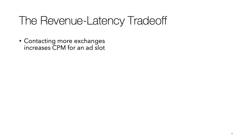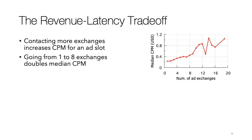We also see that contacting more ad exchanges results in higher CPM for a particular ad slot. On this graph, the x-axis plots the number of ad exchanges contacted, and the y-axis plots the median CPM received for an ad slot. Going from one exchange contacted to eight, the median CPM actually doubles. 95% of the data is between one to eight exchanges contacted, so the randomness beyond that is not of much significance — it results from lack of data.